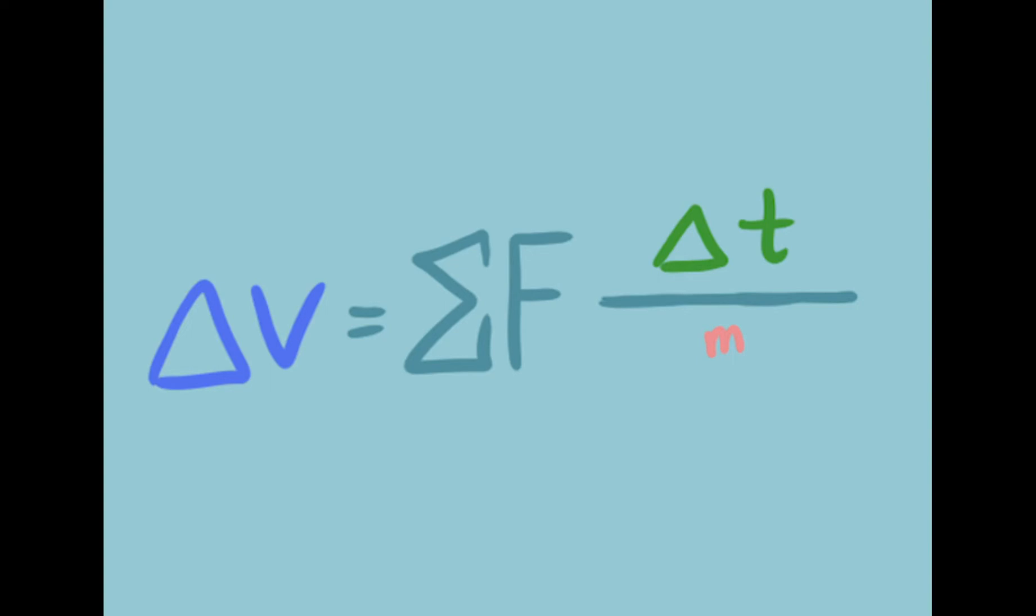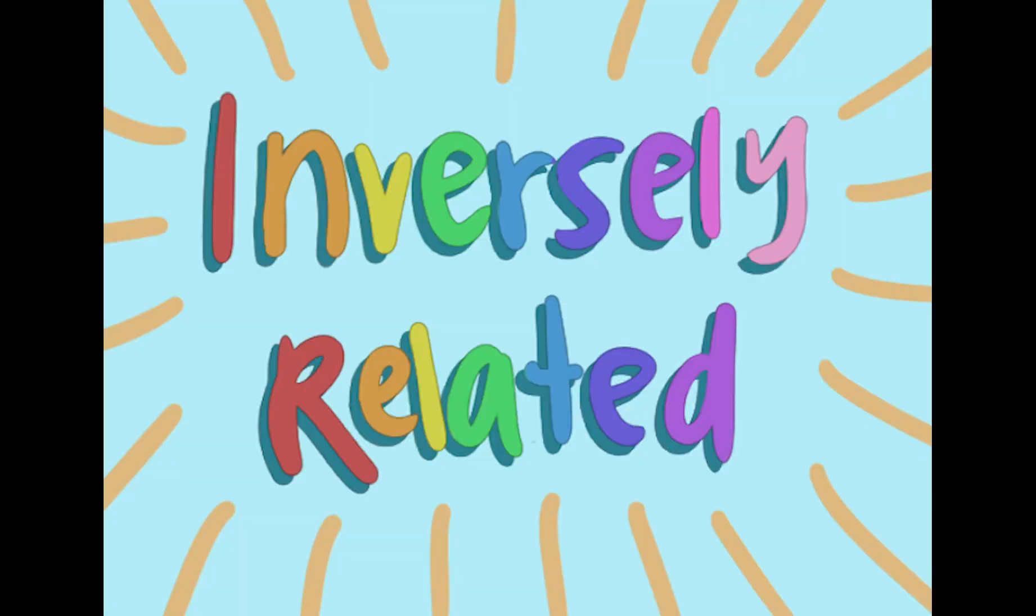If we have a smaller mass, such as the volleyball, it will make our change in velocity a bigger number. If we make our mass a bigger number, it will make our change in velocity smaller. That is because these values are inversely related.